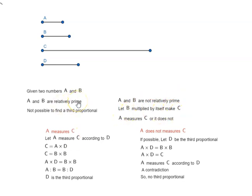If they are relatively prime, there's no third proportional. If we multiply B by itself to make C and A and B are not relatively prime, but A does not measure C, again we do not have a third proportional.